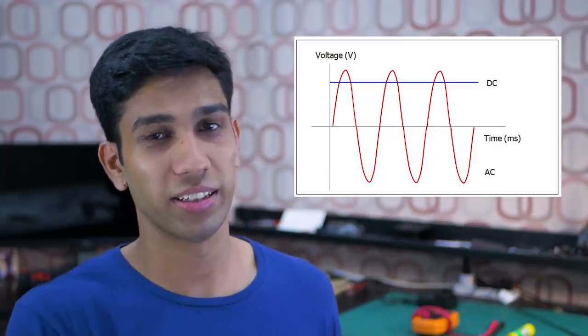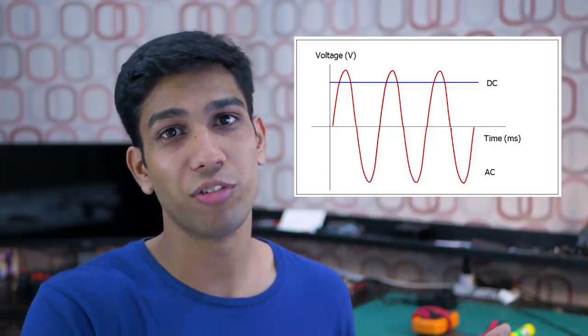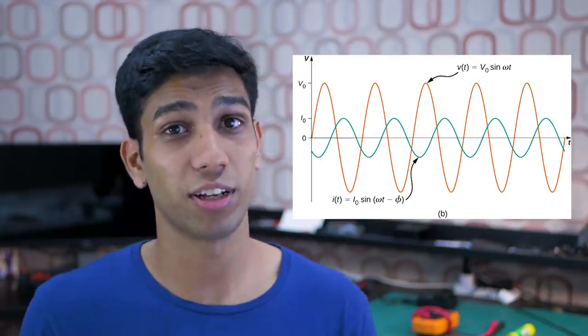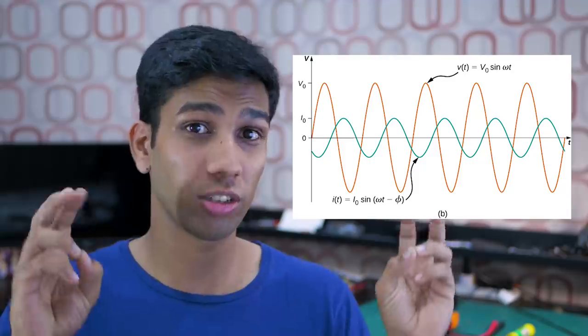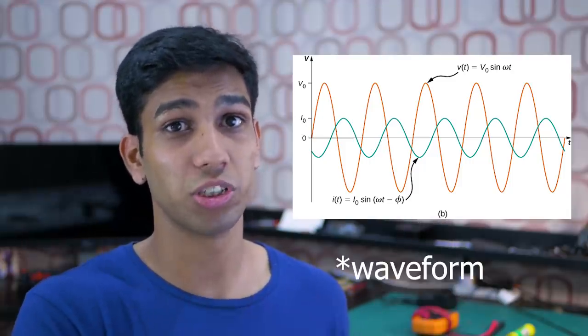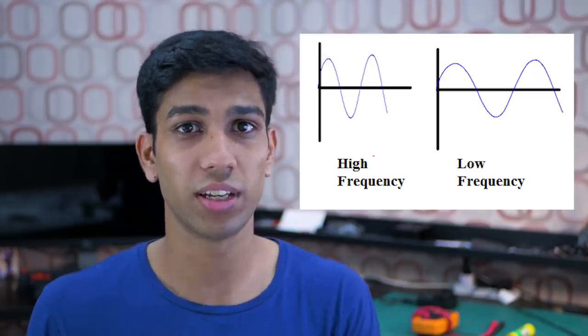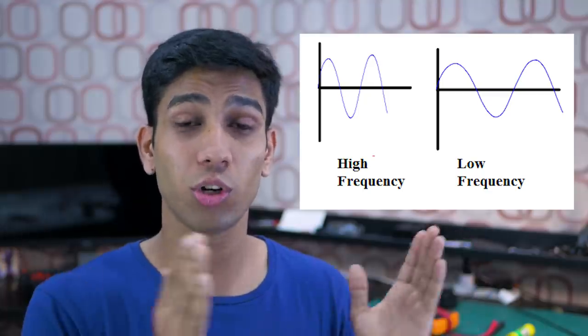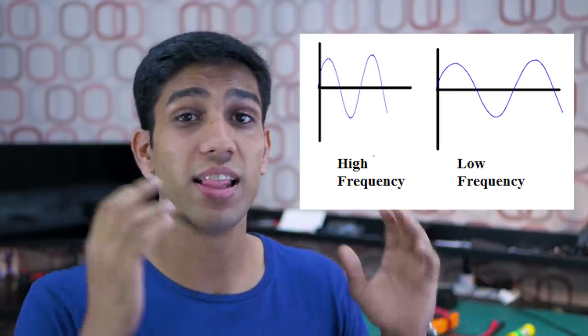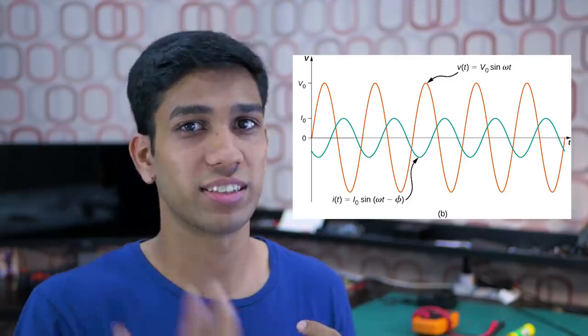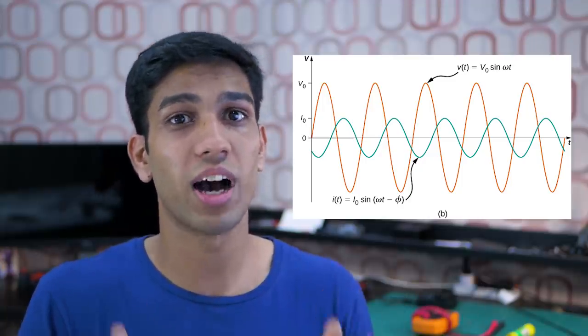Now let's move on to inductors and AC voltages. Inductors behave very differently under AC voltages. AC voltages are basically a constant fluctuation of the polarity of the voltage. This constant polarity fluctuation means that the inductor doesn't have enough time to charge its magnetic field, and this is where a new term — reactance — comes in. Reactance is similar to resistance in the sense that it lowers the current in your circuit. Reactance actually gets higher with higher frequency AC waves, because higher frequency waves have a shorter wavelength which gives the inductor less time to charge, resulting in a higher voltage drop.